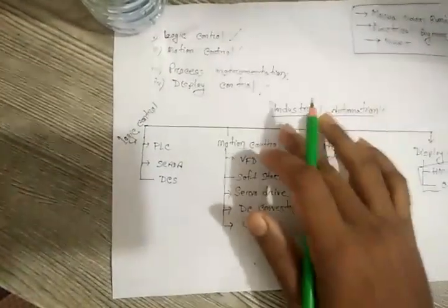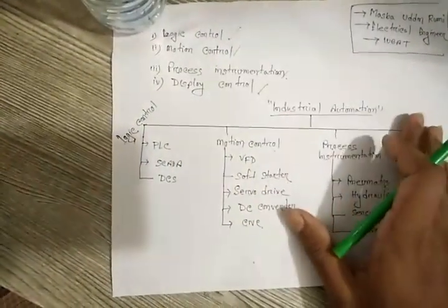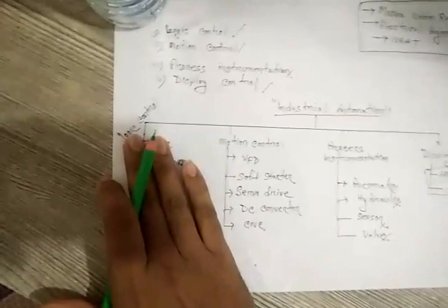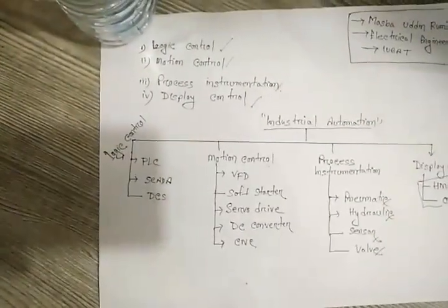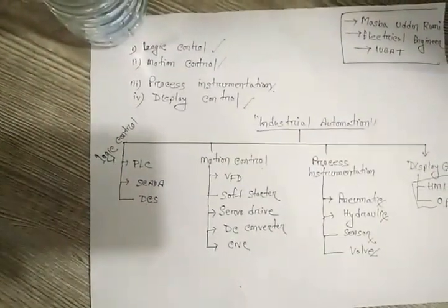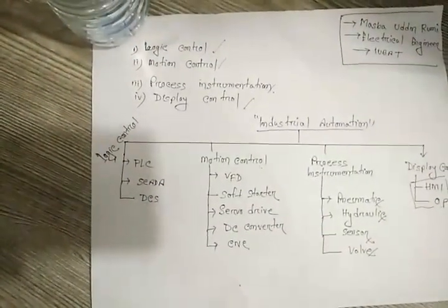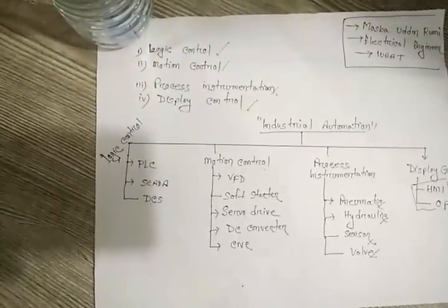If we divide industrial automation, first we come to logic control. Logic control is divided into three main parts. First one is PLC, PLC means programmable logic controller.